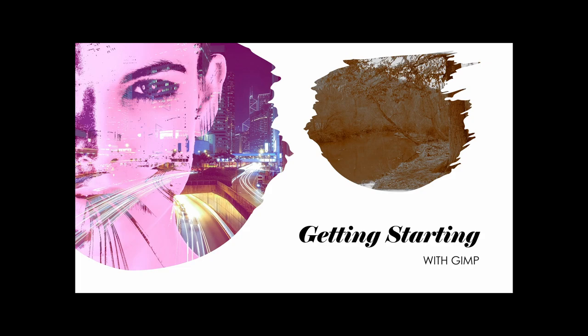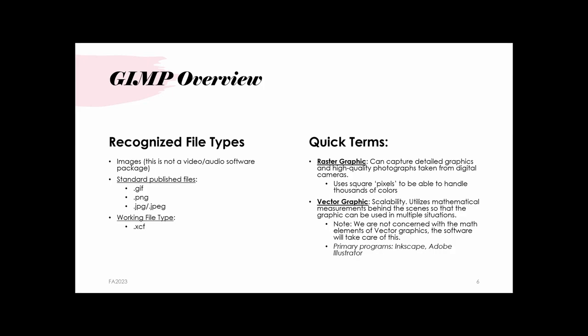Now let's start talking about GIMP itself. We'll put Photoshop on the shelf and focus on getting you up to speed with GIMP. One of the important things when working with a photo editing software package is thinking about the file extensions you can work with. GIMP mainly focuses on image file types — it recognizes GIF, PNG, and JPEG formats, which are also standard web-based published file types you should get comfortable with for this course.